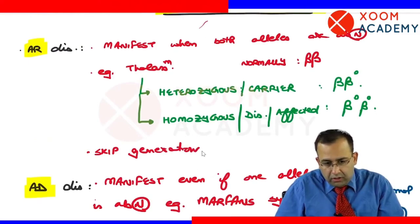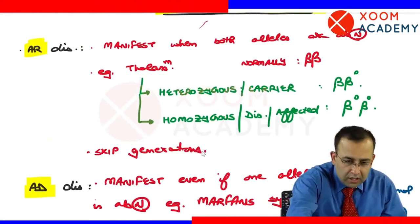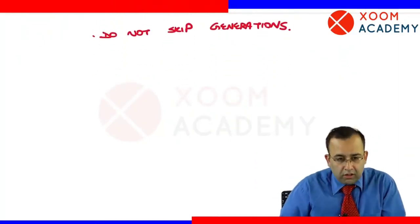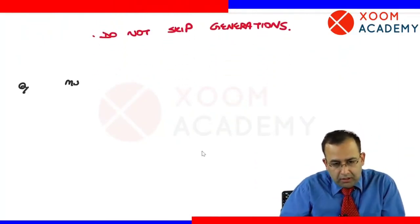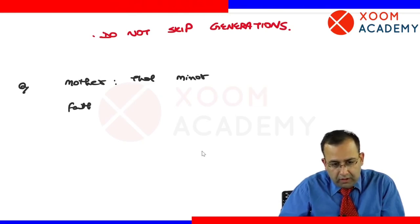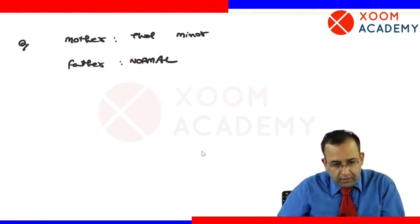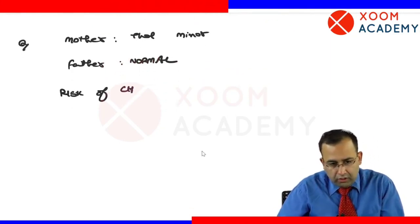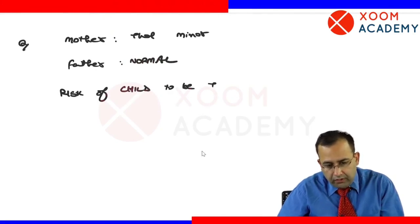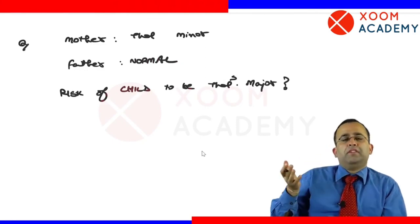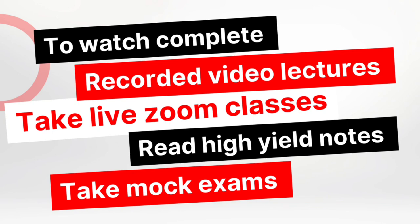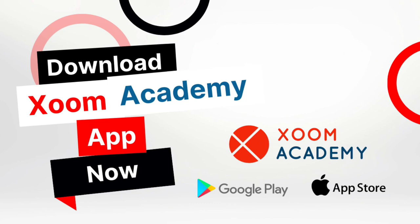What do we mean by skipping generations? Thalassemia is autosomal recessive. Let us do a question: the mother is thalassemia minor, and the father is normal. What is the risk of the child being thalassemia major? The options are 0%, 25%, 50%, 75%, or 100%.